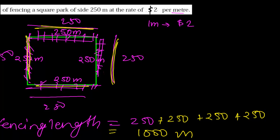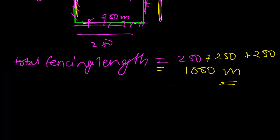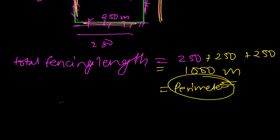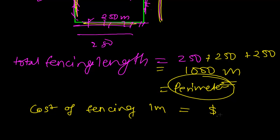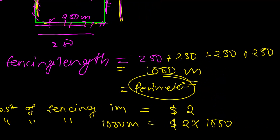So now we have 1000 meters to fence — this is the perimeter. The cost of fencing one meter is $2, so the cost of fencing 1000 meters is $2 times 1000 meters.